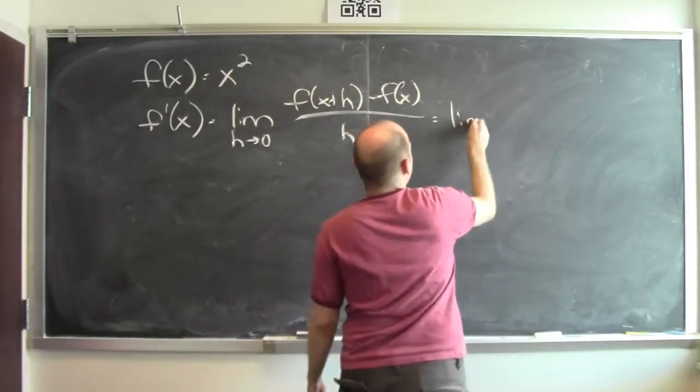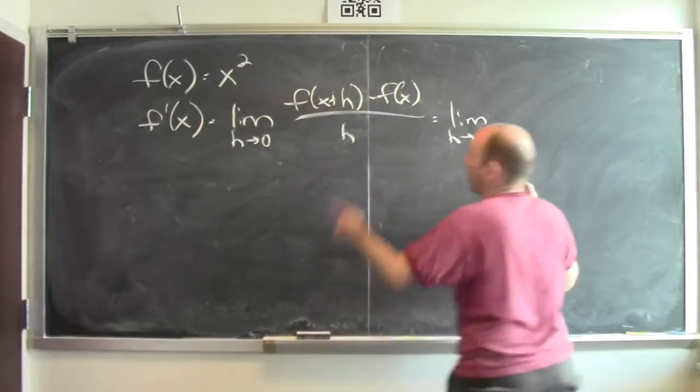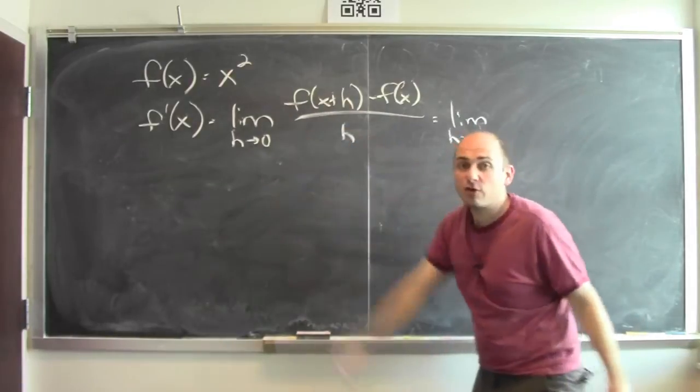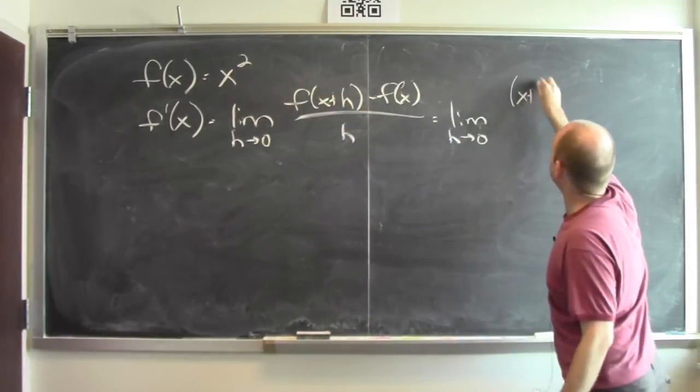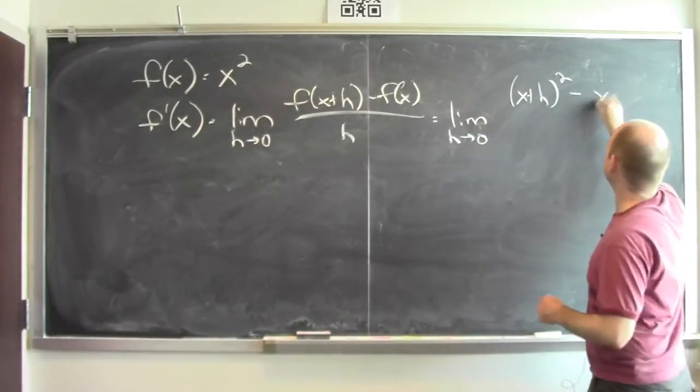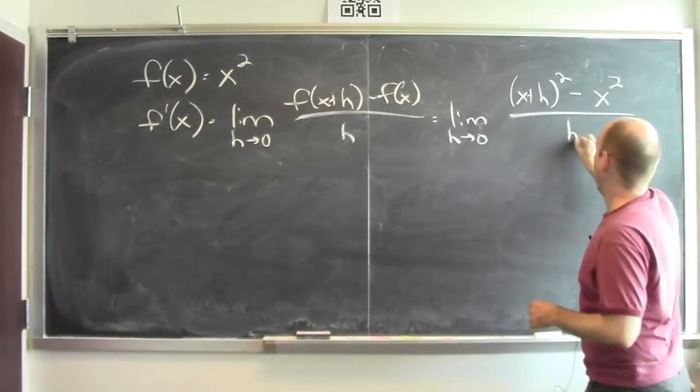This is the limit as h goes to 0 of what's f(x+h). I plug in x+h for x, and I get (x+h) squared minus f(x), which is just x squared over h.